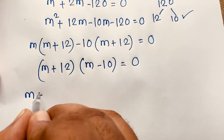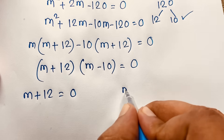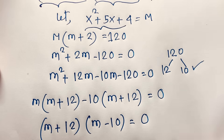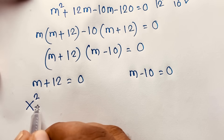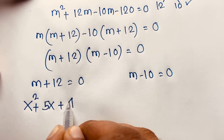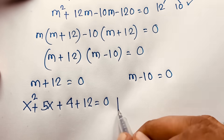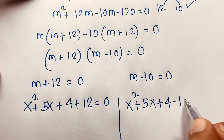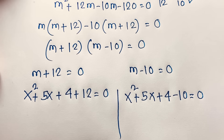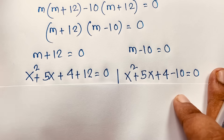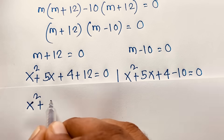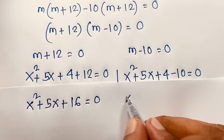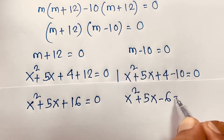Recalling that m = x²+5x+4, the two cases are: Case 1: x²+5x+4+12 = 0, i.e., x²+5x+16 = 0; and Case 2: x²+5x+4−10 = 0, i.e., x²+5x−6 = 0.